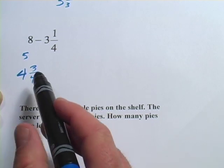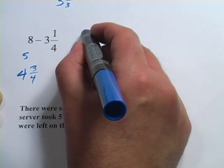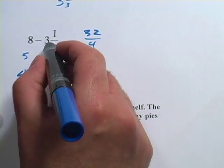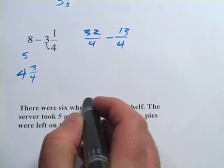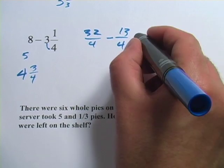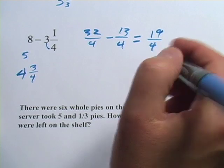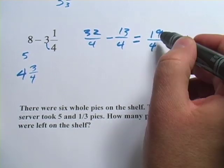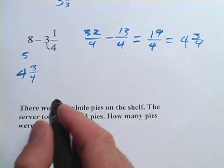If you want to do this the long way, let's convert everything to fourths. 8 in fourths would be 8 times 4 is 32 fourths. Let's convert this mixed number into an improper fraction: 3 times 4 is 12, plus 1 is 13 fourths. Then I would do my subtraction and get 19 fourths. How many 4s in there? 4 times 4 is 16, so that would be 4, and that would leave me 3 fourths. And lo and behold, I get the same thing.